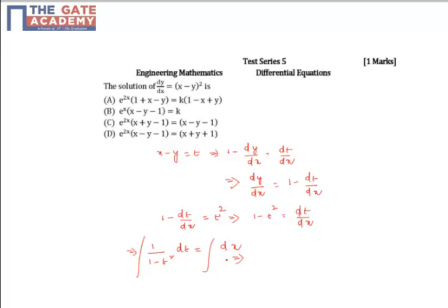This implies integral of 1 by 1 minus t square, which is 1 by 2, ln of 1 plus t by 1 minus t, this is equal to x plus k.